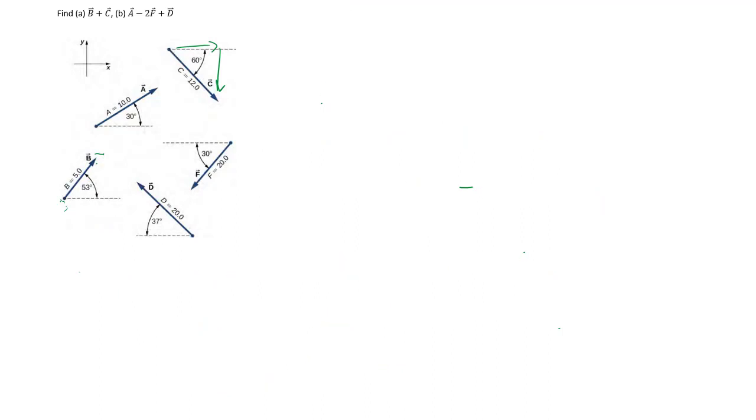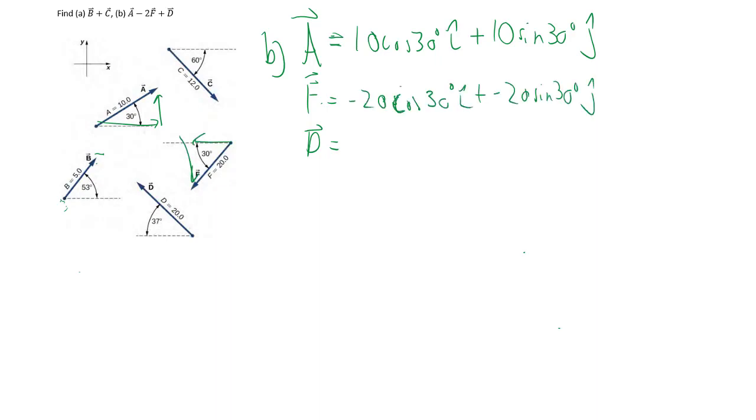We once again break down all the vectors involved into its i and j-hat representation. For my A, they're both positive, so we have those i and j-hat. For my F, both the components are negative. For my D, negative x, positive j.